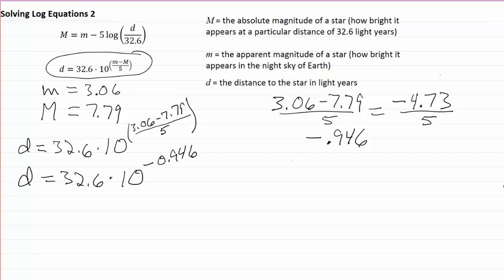Here are the keystrokes I used to do that. I start off as I did before, 32.6 times. And now I need to exponentiate that 10, so I do what I did before, the second button and the log button. And when I do that, my display will show 32.6, an asterisk to indicate multiplication and a 10 carat and a left parenthesis.